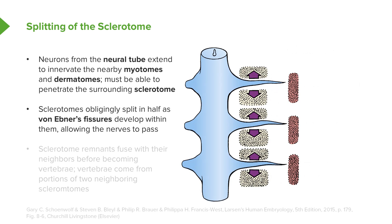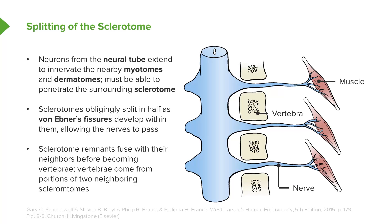Each sclerotome develops little fissures inside of it called von Ebner's fissures. These fissures fully separate each sclerotome and actually allow it to migrate, so portions of one sclerotome will fuse to a portion from its neighbor. That creates a channel that allows the nerve to exit the spinal cord and reach the myotome and then the dermatome. Once those neighboring portions of sclerotome have met, they fuse and form the actual mature vertebra.